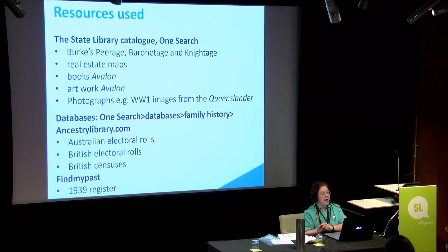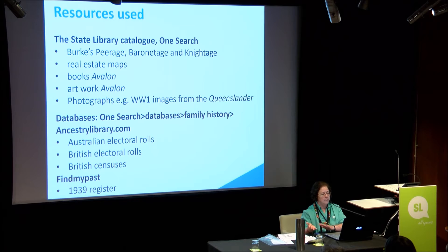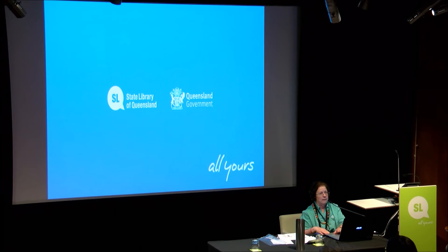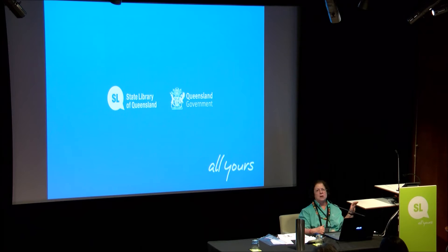Other things you can find through the catalogue: books, real estate maps — 20 going on per month — books such as the one on Avalon, artwork such as Avalon, photographs like the World War I images, but also lots of other photographs of houses and people. Under databases, you can go to the Family History homepage and connect, or go through databases and then Family History. Find My Past, which we have here but only on site — as with Ancestry and the 1939 Register.